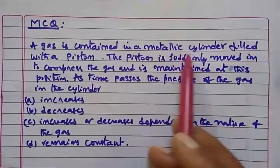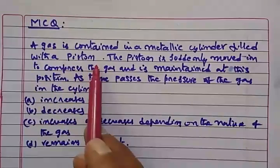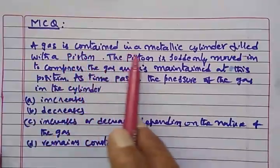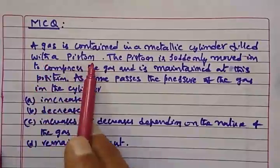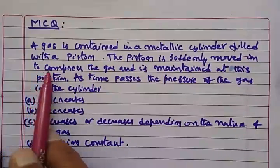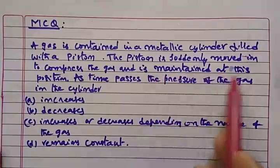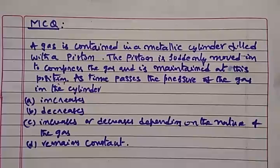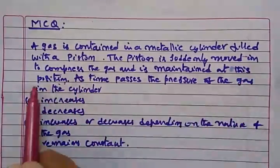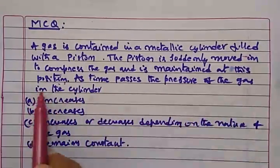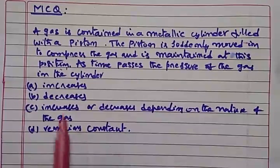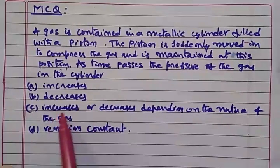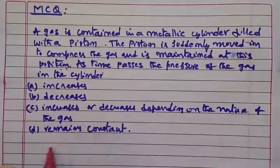Now let us test our understanding with an MCQ. A gas is contained in a metallic cylinder fitted with a piston. The piston is suddenly moved in to compress the gas and is maintained at that position. As time passes, what happens to the pressure of the gas in the cylinder — does it increase, decrease, increase or decrease depending on the nature of the gas, or remain constant?